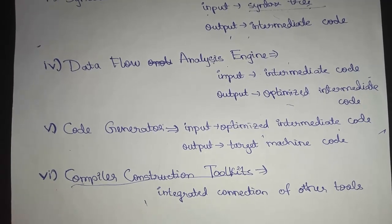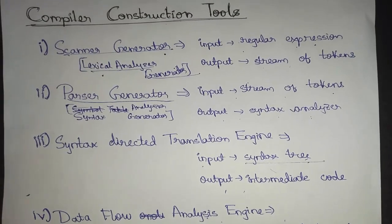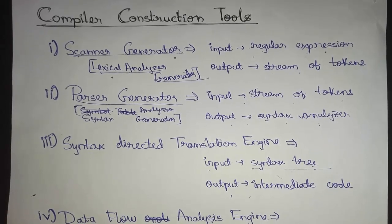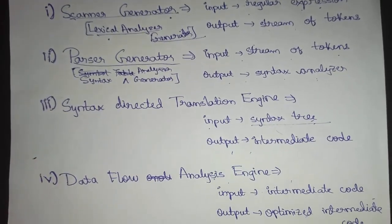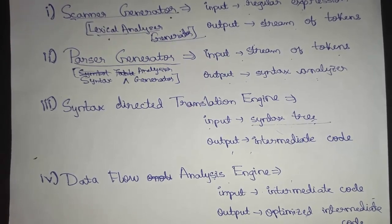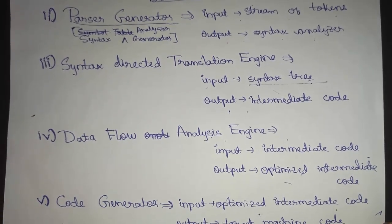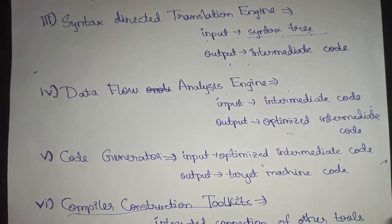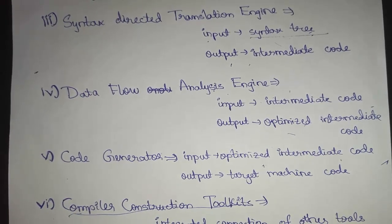A compiler construction toolkit is an integrated collection of all the above tools used to generate each phase of a compiler. First, the scanner generator produces the lexical analyzer. Then the parser generator produces the syntax analyzer. The syntax directed translation engine provides the semantic analyzer and intermediate code generation phases. The data flow analysis engine handles code optimization to produce optimized intermediate code.